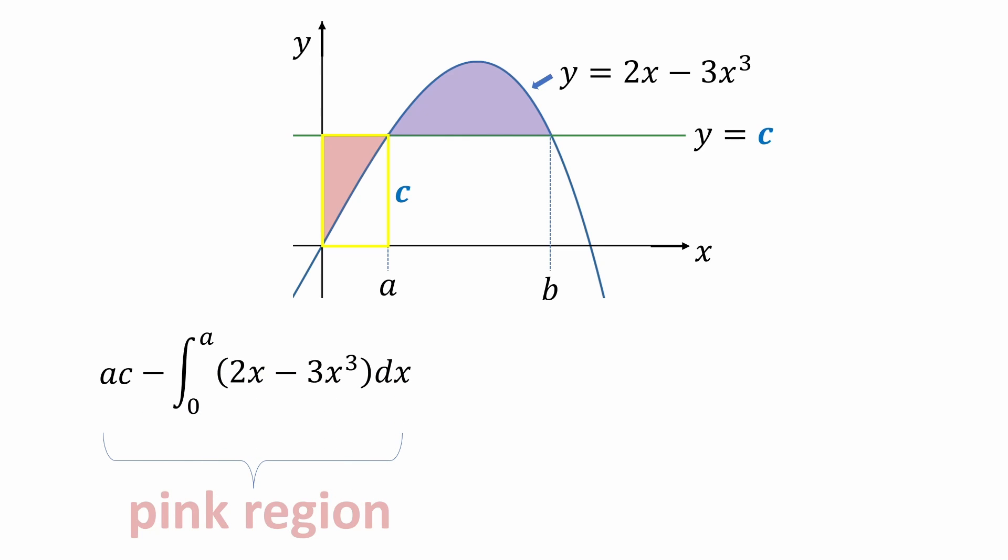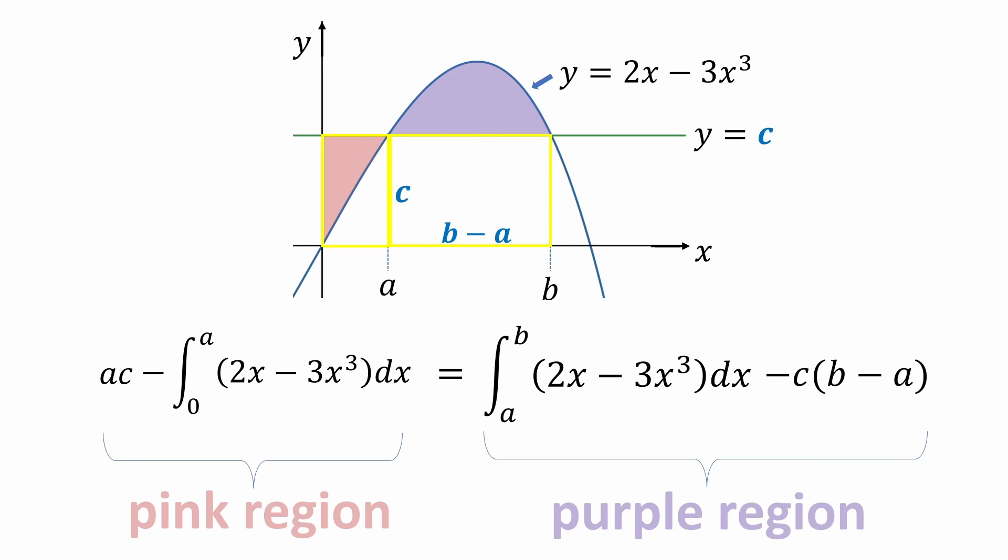And now we're going to set this expression equal to the area of the purple region which is equal to the integral of the cubic function from a to b minus the area of the rectangle directly below the purple region. And that rectangular area would be c times b minus a.